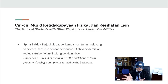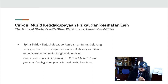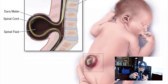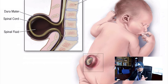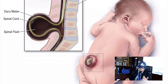Next is spina bifida. This disability happens as a result of the failure of the backbone to form properly, which causes a bump to be formed on the backbone. You can see the illustration clearly on the screen. If you want to know more about spina bifida, click on the link and watch the video.